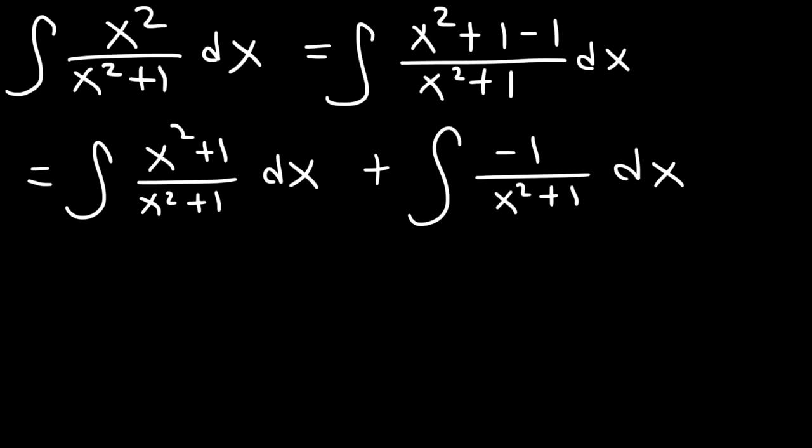Now x² + 1 divided by itself is equal to 1, so we have the integral of 1 dx on the left side. Then I'm going to move the negative sign to the front, so this is negative integral 1 over x² + 1 dx.